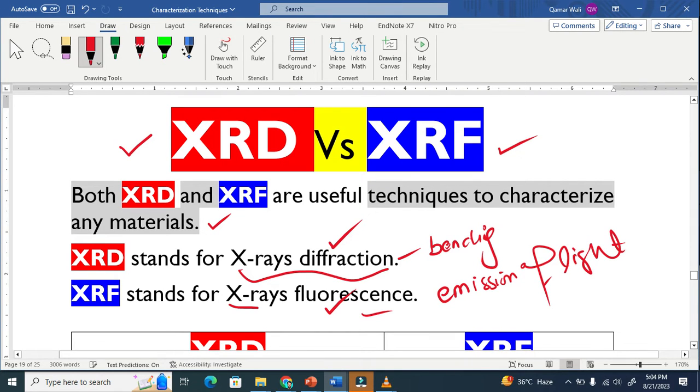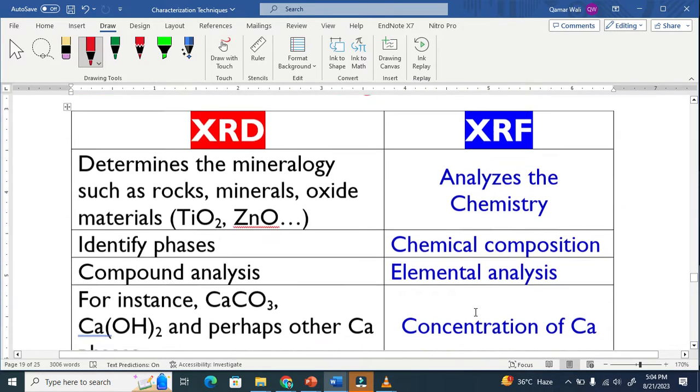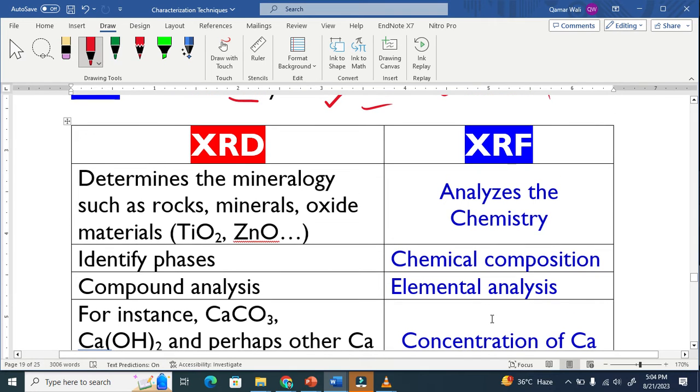Let's get started with a very important comparison. XRD basically gives information about the mineralogy. Mineralogy basically means minerals, rocks, like oxide materials: titania, this compound here, nacl.